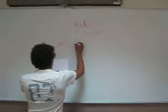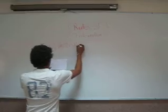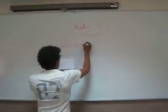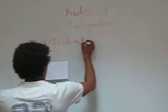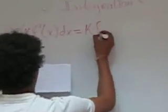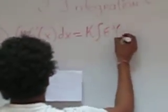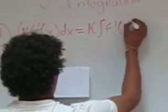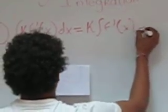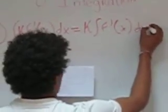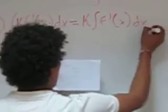The first rule we're seeing right here is the constant rule. For this rule, we have to take the constant out of the integral.